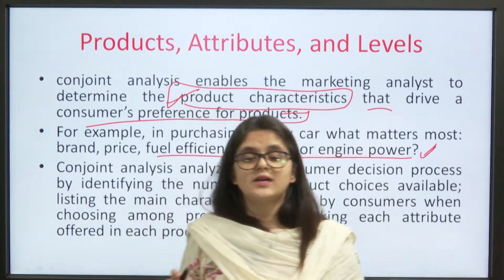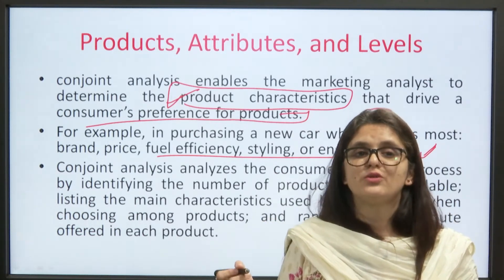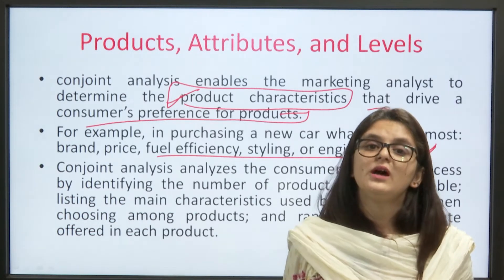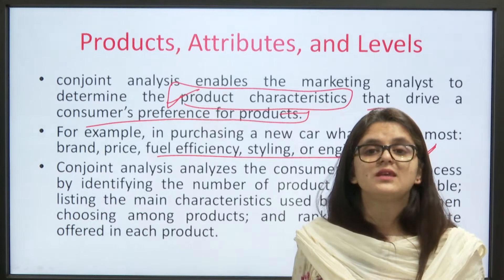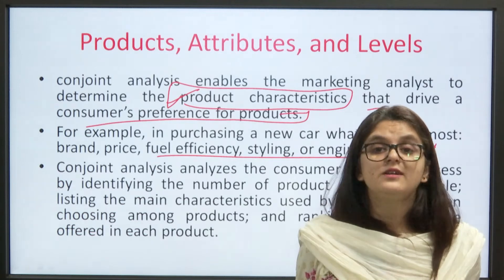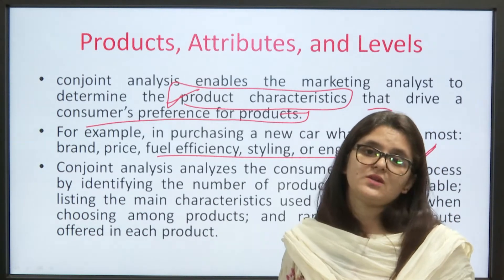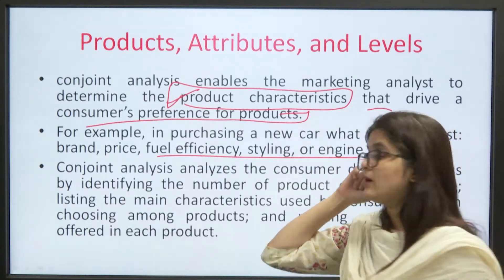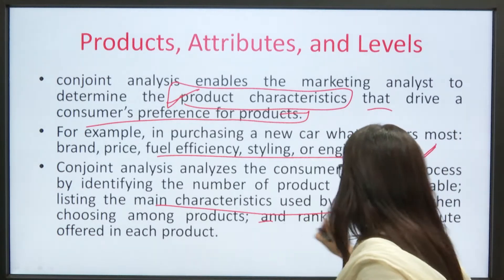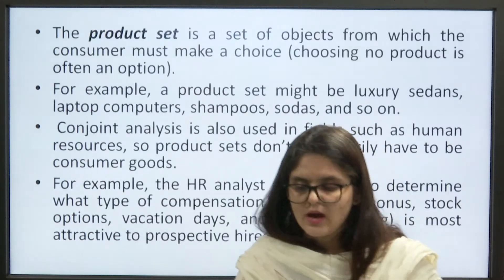Conjoint analysis analyzes the consumer decision process by identifying the number of product choices that are available. It helps in identifying how many different options are available, listing the main characteristics of the product, and among those products, each one is offered different specific attributes.